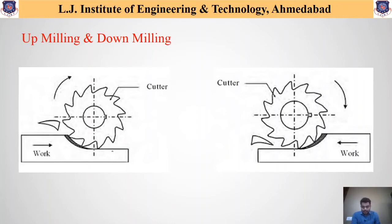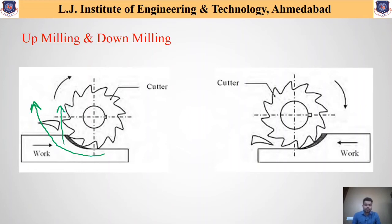In the up milling process, the cutter moves from the bottom section towards the upward section. Due to this, there are chances that the cutter tends to lift the workpiece in the upward direction, and therefore proper clamping and fixtures are required during up milling. In down milling, the forces acting on the workpiece are in the downward direction, which provides a type of fixture or steadiness to the workpiece, so there is no major requirement for clamping or fixtures.